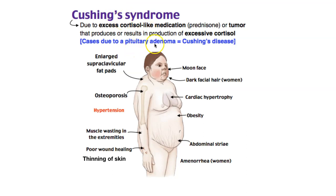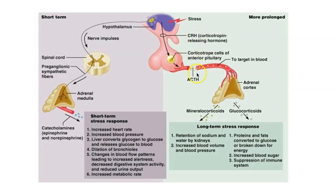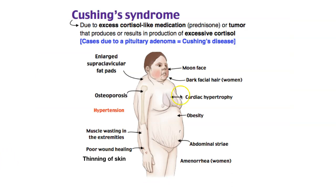If it's due to a pituitary adenoma — meaning the adenohypophysis, also known as the anterior pituitary gland — if a tumor in the anterior pituitary gland is secreting too much ACTH, the adrenal cortex will keep on making corticosteroids. These are the manifestations you'll see in patients.